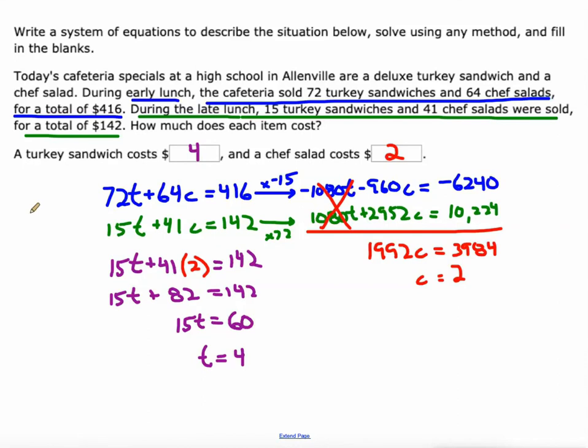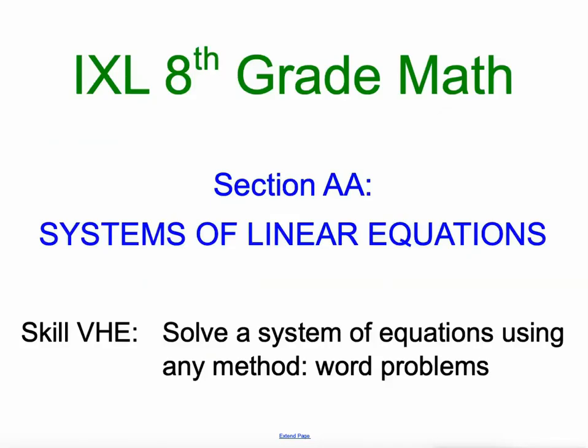All right. So those numbers got big. Maybe there was a lower common multiple that I could have used other than 1,080, but it worked out for me. So there's solving a system of equations using any method, basically substitution method or combination method. Good luck.